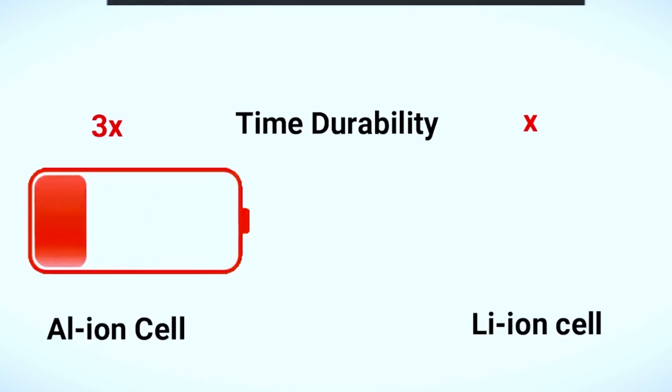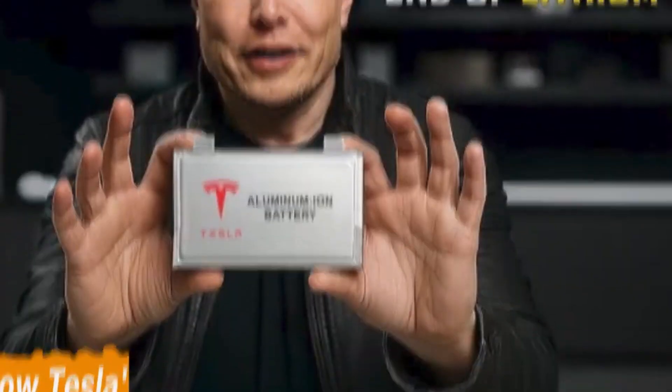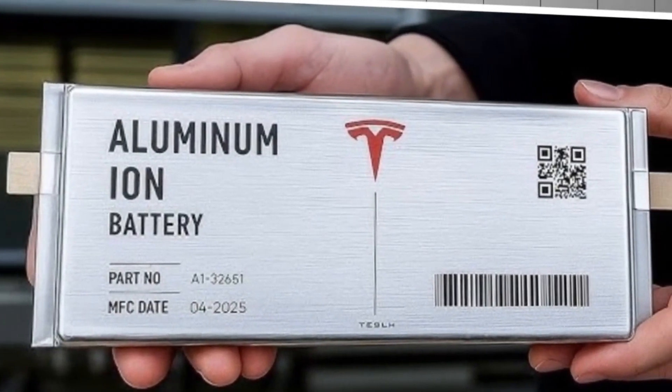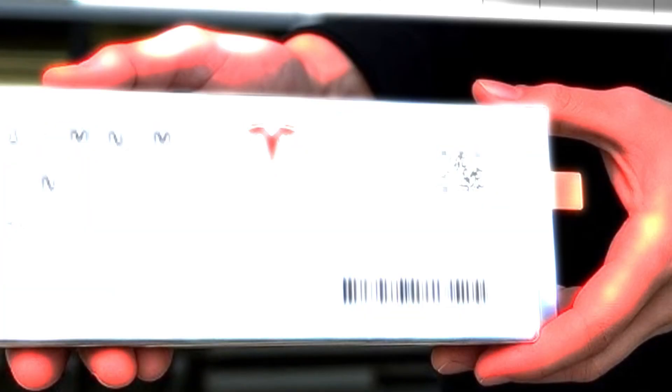Then comes lifespan. Lithium batteries wear out after about 2,000 charge cycles, just a few years of daily use. Aluminum-ion can last over 50,000 cycles, enough for 70-plus years.